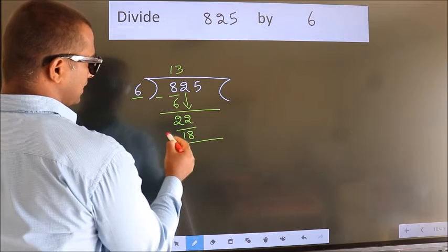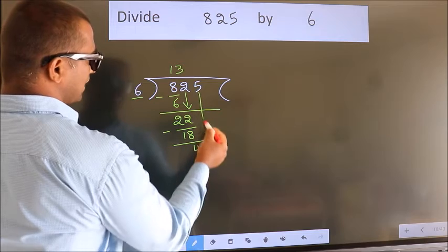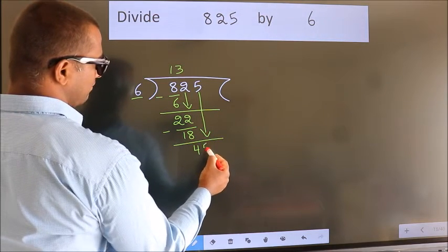Now, we subtract. We get 4. After this, bring down the beside number. So, 5 down.